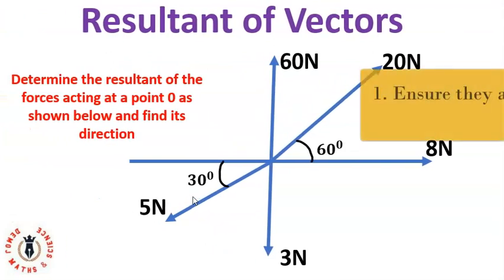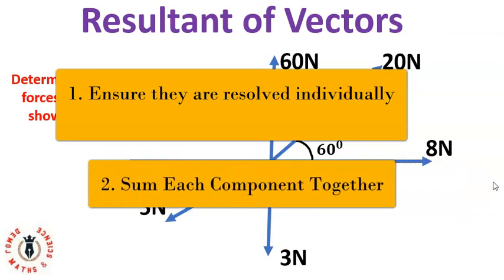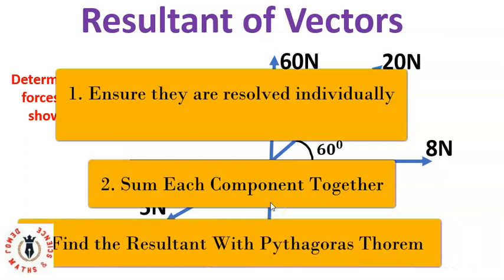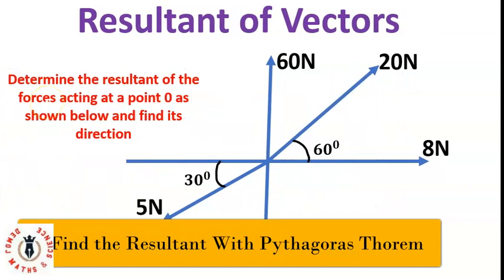When solving such problems, the first thing is to ensure that these vectors are resolved individually along the two perpendicular directions — that is, you must resolve each vector along the x and y directions. The second step is to add each of the components together. The third thing is to find the resultant of the summed components along each direction.